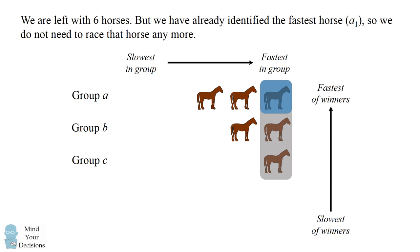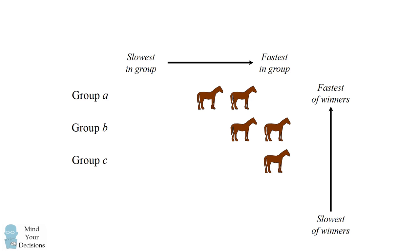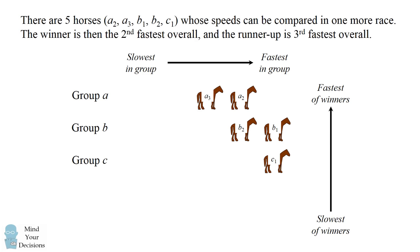We're left with six horses. We can only race five at a time, but we can get rid of one of them: we've already identified the fastest horse overall, A1, so we don't need to race it anymore — we can't learn any more information by racing it. So we now have A2, A3, B1, B2, and C1, and we do not know the relative speeds of these horses. We do one more race with these five. The winner will be the second fastest horse overall, and the runner-up will be the third fastest overall. These seven races allow us to identify the three fastest horses.